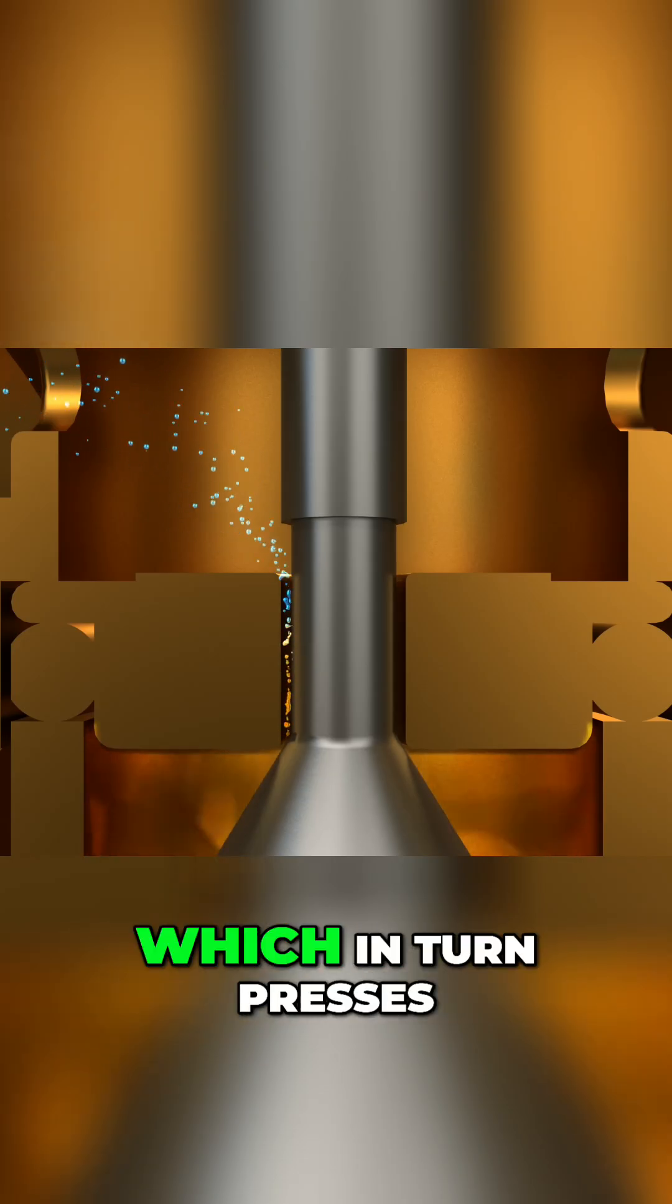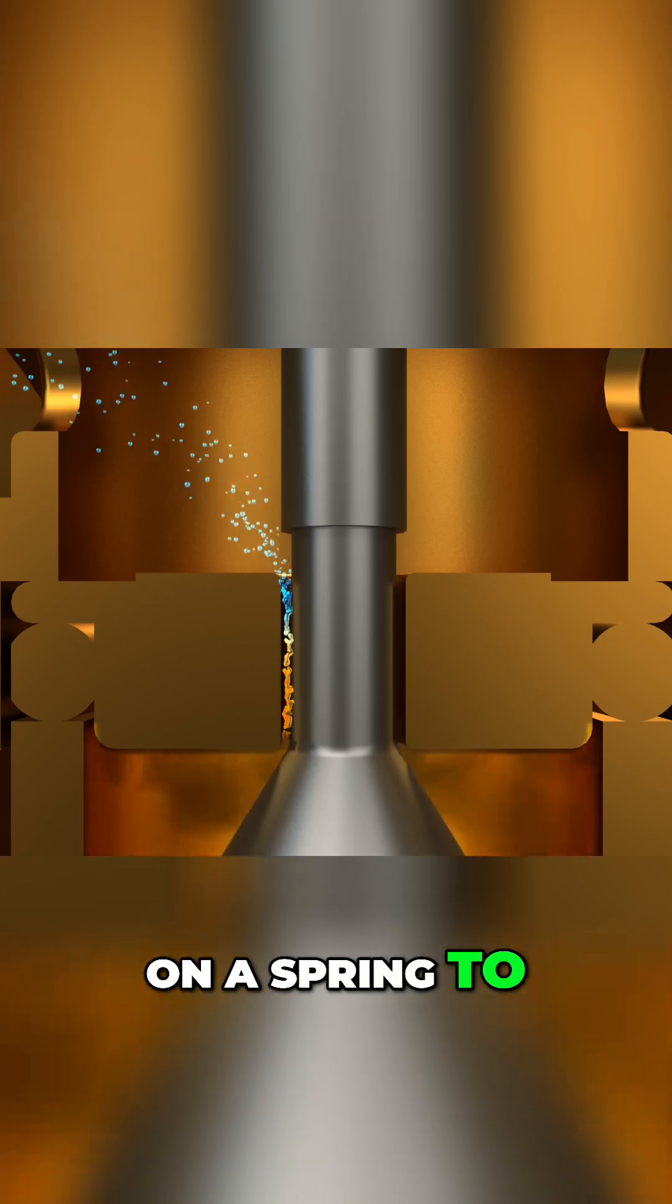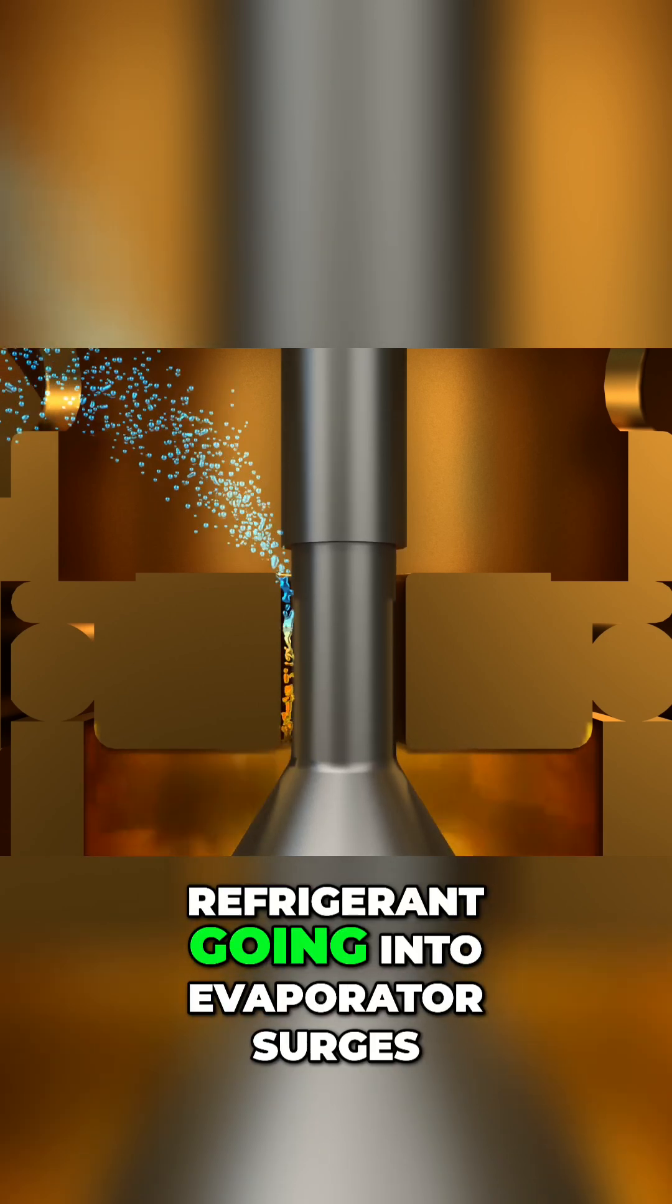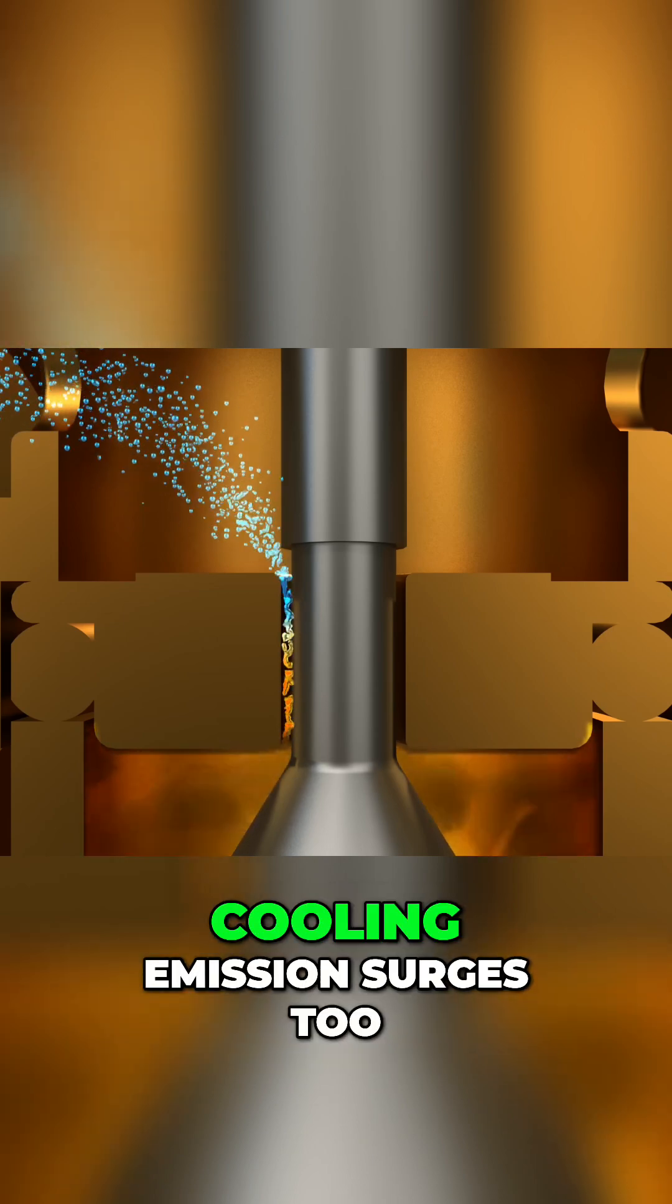The gas pressure rises which in turn presses on a spring to send more refrigerant to the evaporator. When the amount of refrigerant going into the evaporator surges, cooling emission surges too.